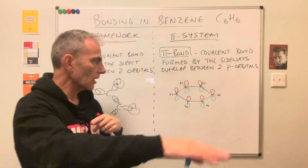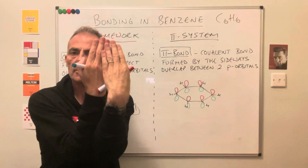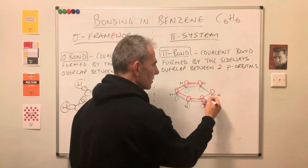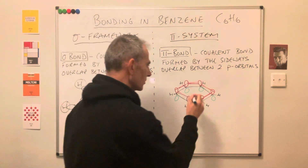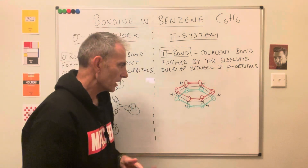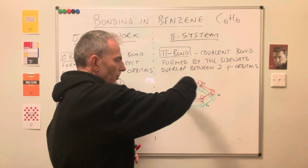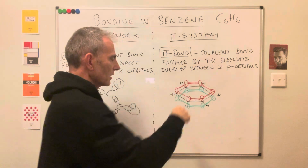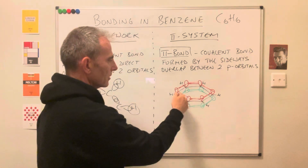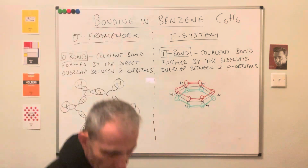These p orbitals are perpendicular — at right angles — to the sigma framework. The upper lobes overlap sideways with each other, and the lower lobes overlap sideways as well. What happens is we get a new region of space formed where the electrons can move around in. For the upper region of space, we get a donut-shaped ring where the six electrons can whiz around. Likewise, we've also got that going on underneath the sigma framework. I've got a model that shows that.